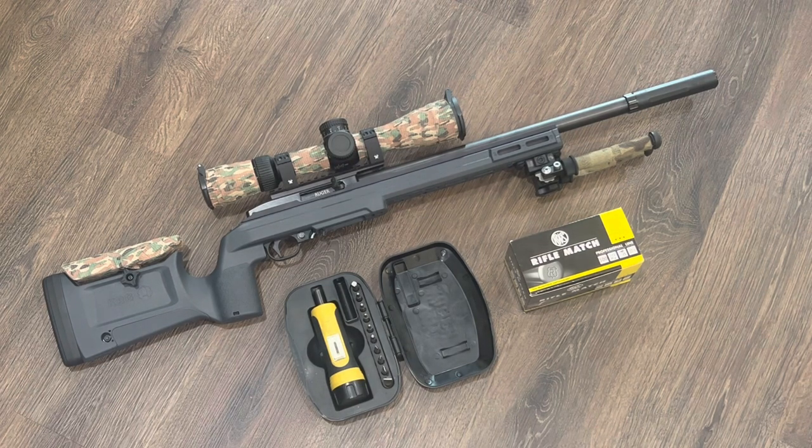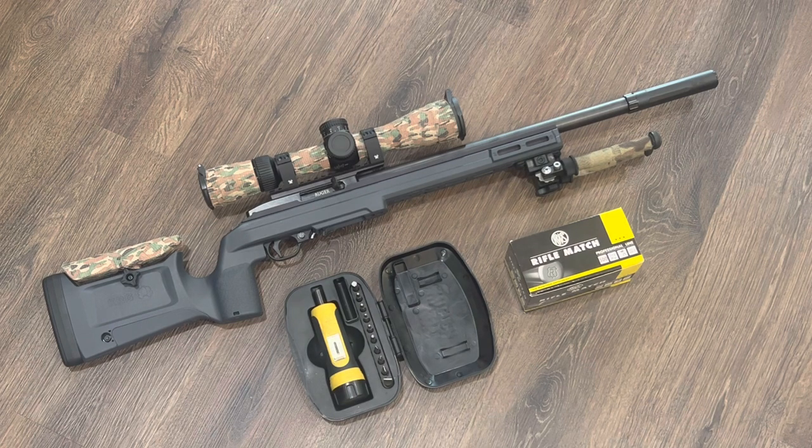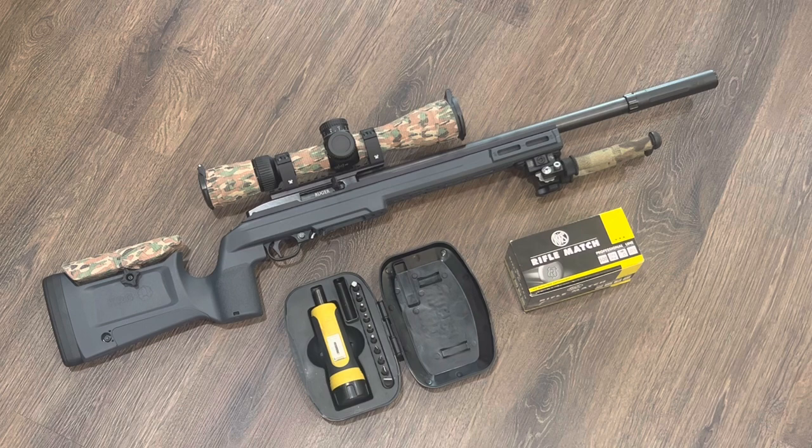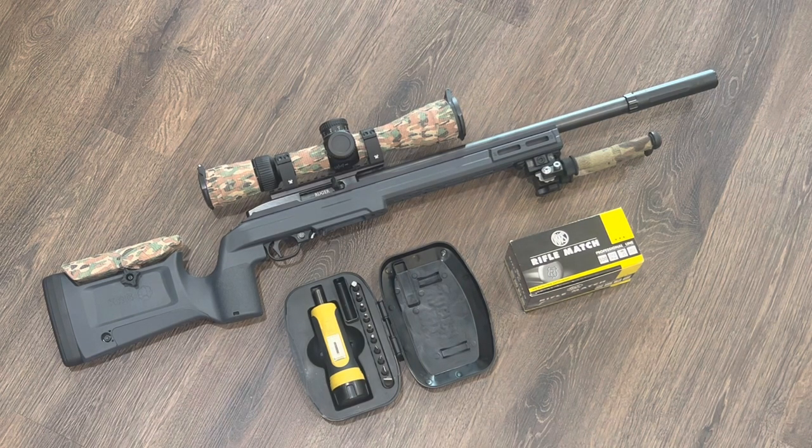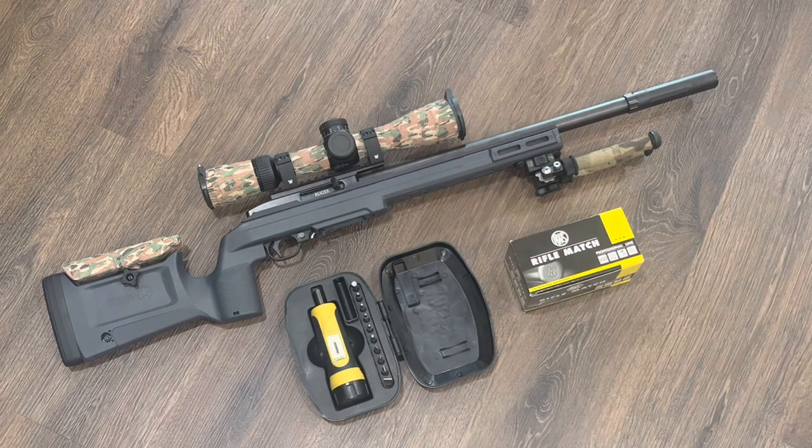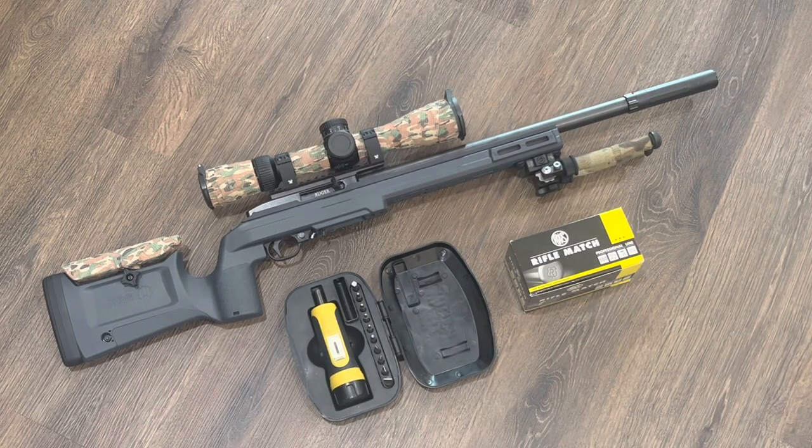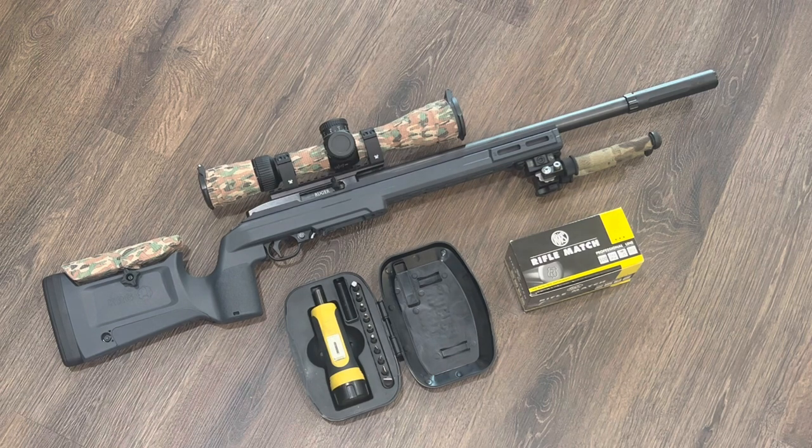Here in part four we're going to take a look at two things. The first thing is the KRG Bravo chassis for the 10/22, and the second thing is we're going to redo our action screw torque test.